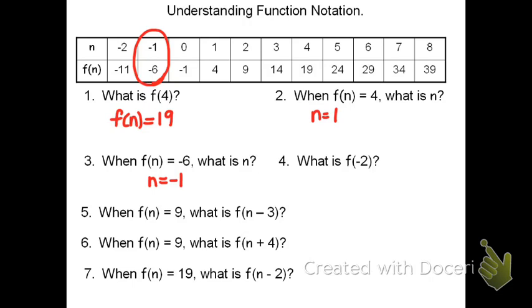For problem 4, now it says, what is f of negative 2? To find f of negative 2, that's basically asking me, when the input is negative 2, what is its output? So I'm going to look at the table and find the input, that's the top, the n values, that's equal to negative 2. It's over on the far left-hand side. To find the value of f of negative 2, I'll look below and find what its output is. In this case, f of negative 2 equals negative 11. And that's my answer. f of negative 2 equals negative 11.